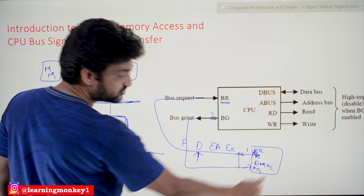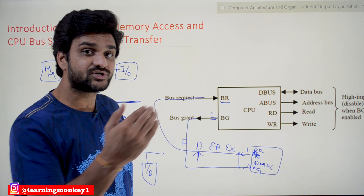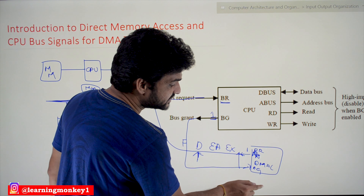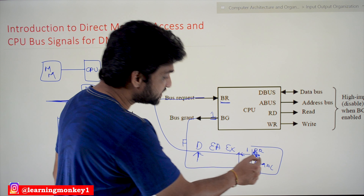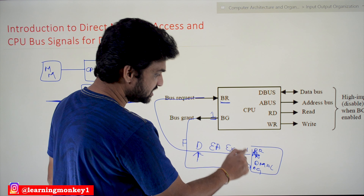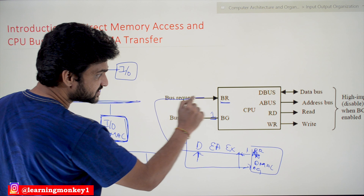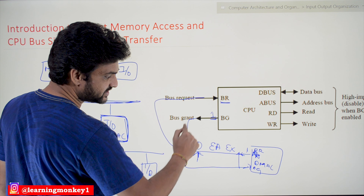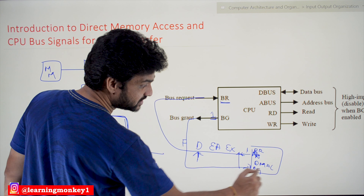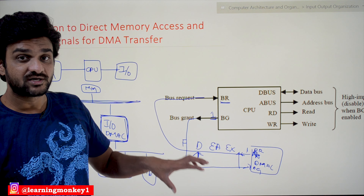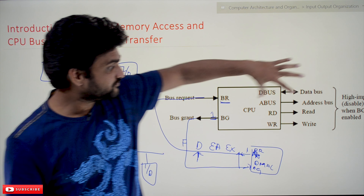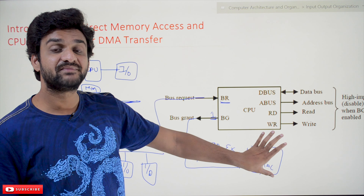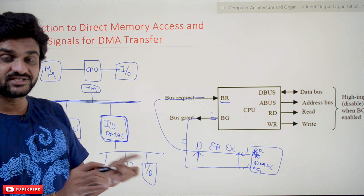So the process is: the DMA controller, whenever the I/O device has data to transfer, sends a message to the DMA controller. The DMA controller requests the bus. The bus request line gets activated, and the CPU immediately sends the bus grant signal to the direct memory access controller. With that, the CPU's bus is deactivated, and the bus is now activated by the DMA controller.